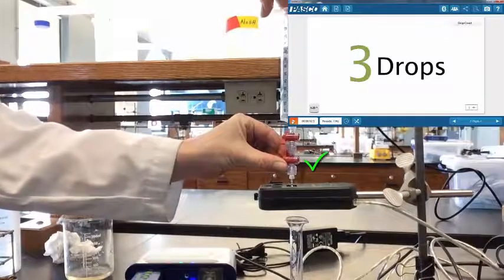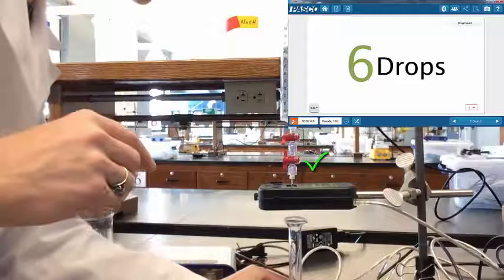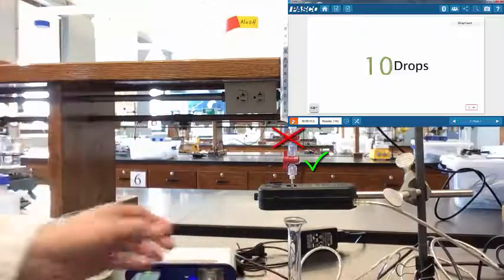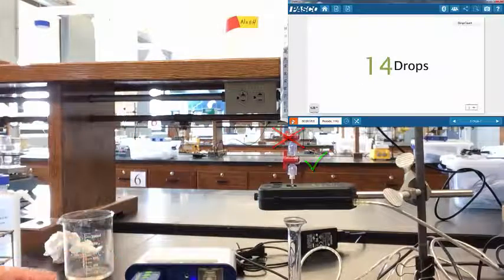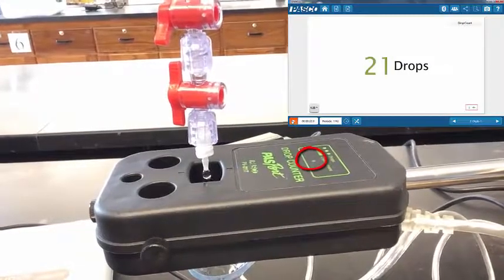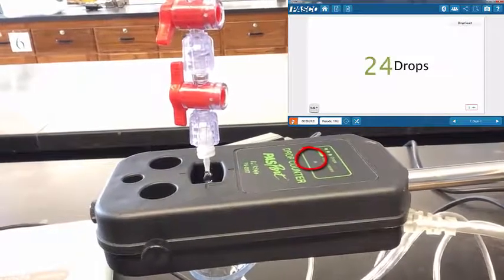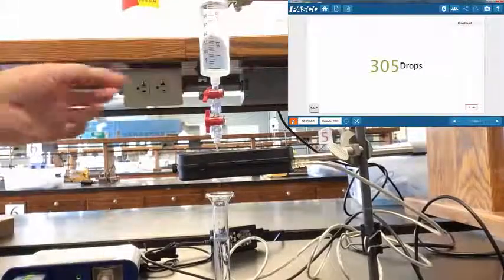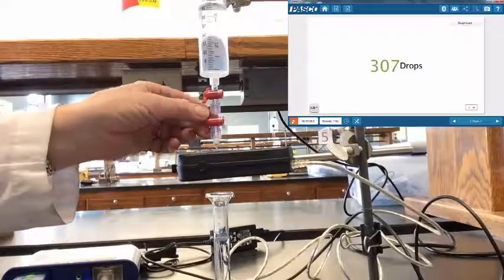When you are ready, open the bottom stop cock and make sure you do not adjust the top stop cock. If you look at the face of the drop counter, you will see that there is a green LED light that flashes every time a drop passes through the drop counter. It is important that you check that this LED is flashing which will tell you that the drop counter is functioning properly.